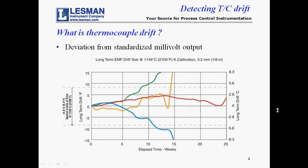Thermocouple drift is the deviation of a thermocouple's output signal from the published values in the standard reference tables. The chart shows a test of several different thermocouples at a constant elevated temperature over time. The center line is zero deviation from the constant temperature. The dashed lines above and below the center are the standard limits of error. You can see the green, blue, and yellow curves drifting and wandering away from the zero deviation center line over time. The temperature signals from a drifting thermocouple are not true temperature measurements — they are false temperature measurements.